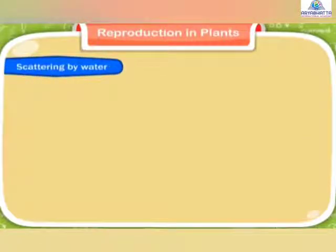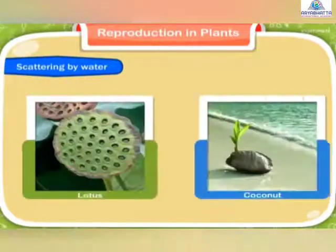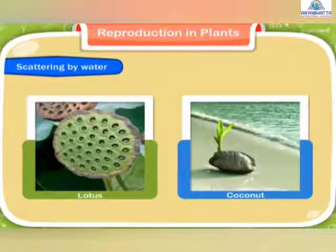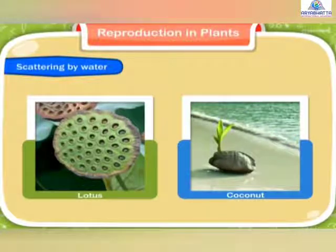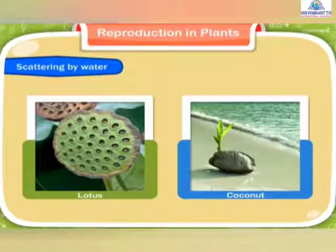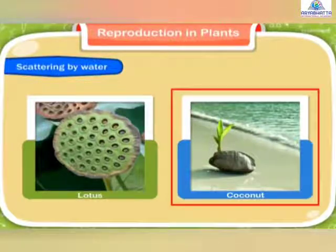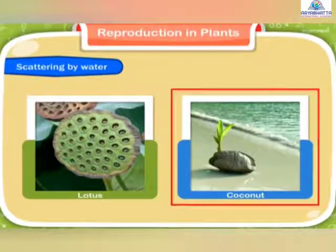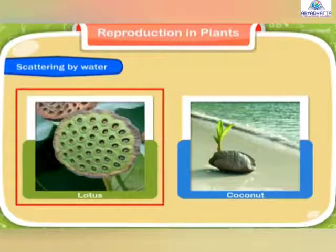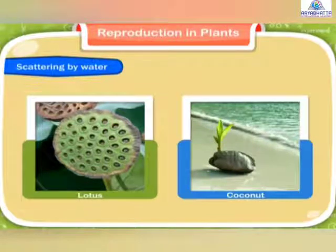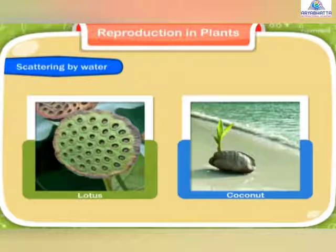Scattering by water. Some plants like lotus and coconut grow in or near water. The fruits and seeds of these plants are easily dispersed by flowing water. The coconut has a thick coverage of fiber and the lotus plant has a spongy part that help them to float, so the seeds reach far away from their parent plants.